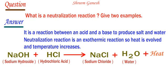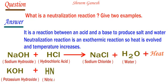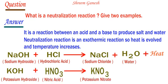Second example: potassium hydroxide is reacted with nitric acid. The products are potassium nitrate and water.